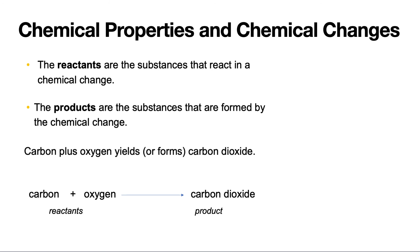The reactants are the substances that are in a chemical change, so they're to the left of the arrow. The products are the substances that are formed by the chemical change, so they're to the right of the arrow. Here we see carbon plus oxygen yields or forms carbon dioxide, which is our product.